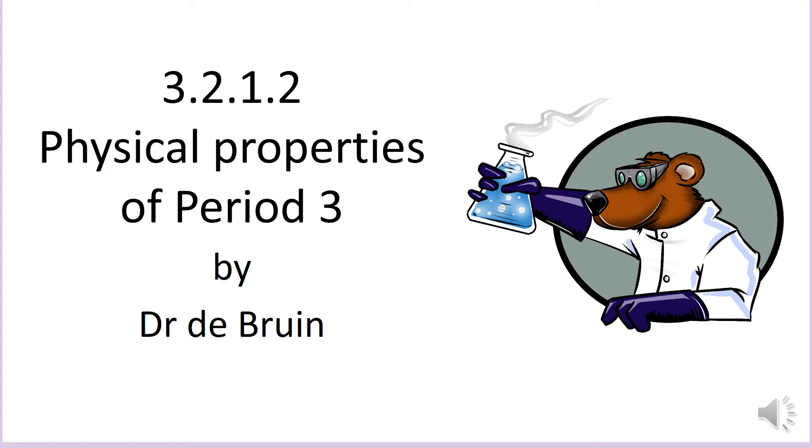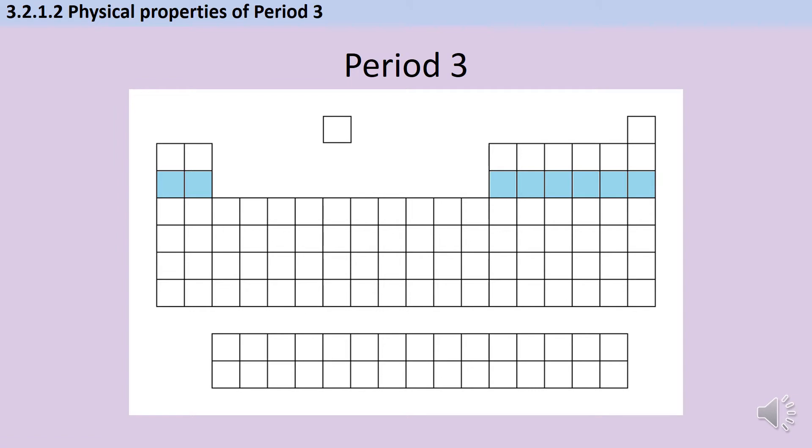This is a revision video for the AQA inorganic chemistry topic of periodicity, specifically looking at the physical properties of the elements in period 3. The periodic table is divided into vertical columns called groups and horizontal rows called periods. Here we're looking at period 3, which is highlighted in blue, and we're using this as an example for describing the general trends that we would see across the periodic table. So although the AQA specification names period 3, it would be easy to ask you the same questions about period 2, and the same general trends would apply.